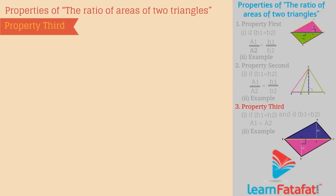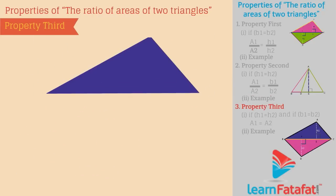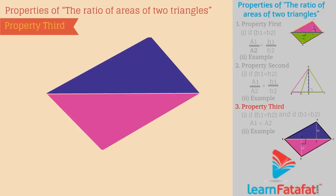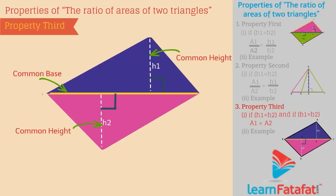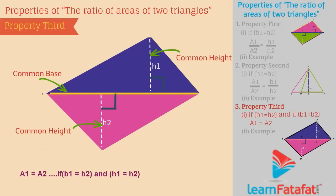Third, the ratio of areas of two triangles having common or equal bases and common or equal heights is 1. This signifies that the areas of the two triangles are equal — A1 is equal to A2 — for all cases where B1 is equal to B2 and H1 is equal to H2.